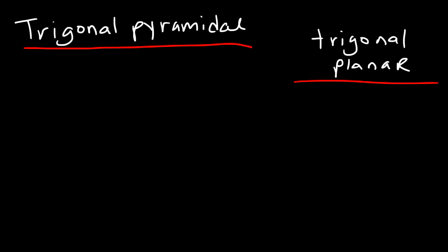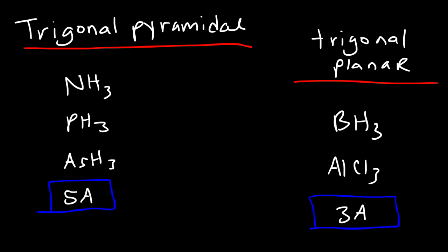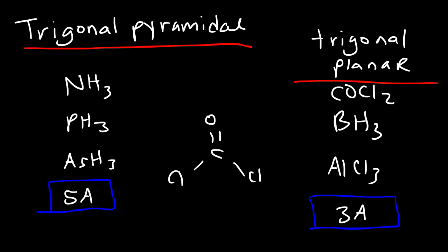Elements with a trigonal pyramidal structure tend to be in group five A, like NH3, PH3, and AsH3, when hydrogen is the only other atom attached. Elements with a trigonal planar structure tend to be in group three A — BH3 and AlCl3 are examples. This is a quick way to identify which will be trigonal planar versus trigonal pyramidal, as long as no double bonds are involved. With double bonds, like in COCl2, the pattern may differ.